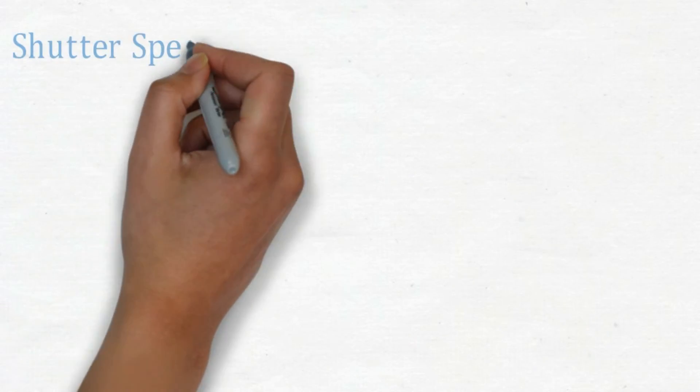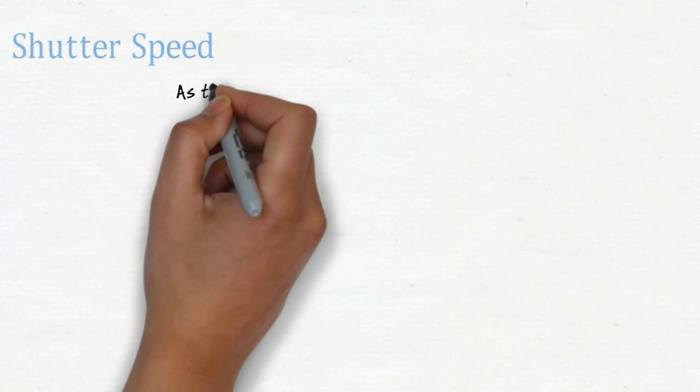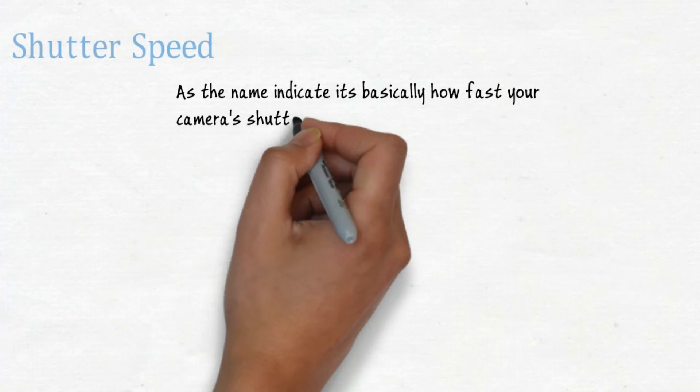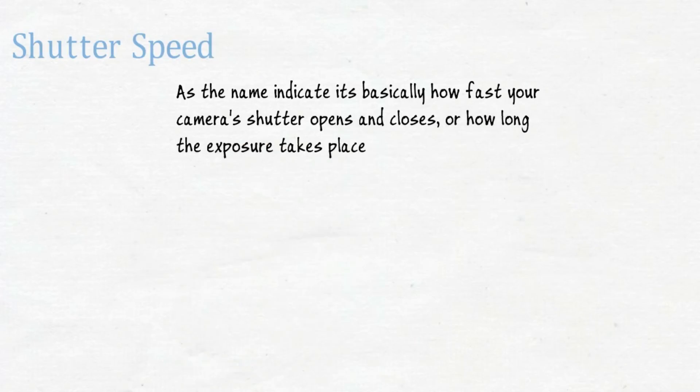Shutter speed: As the name indicates, it's basically how fast your camera's shutter opens and closes, or how long the exposure takes place.